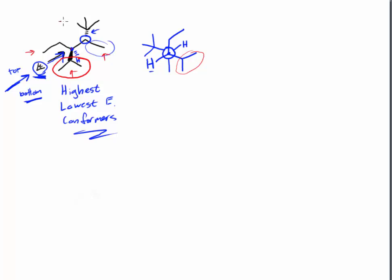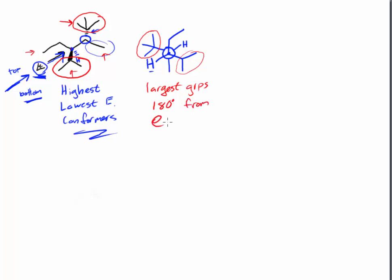On the back carbon, we have methyl, t-butyl, and hydrogen. T-butyl will almost always be the largest group whenever we have a choice. So there are our two large groups — one on the back carbon up and to the left, one on the front carbon down and to the right. They are already 180 degrees from each other, so this is the lowest energy conformer. The largest groups are as far apart as possible.